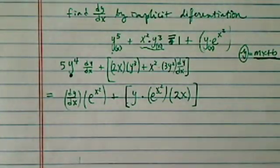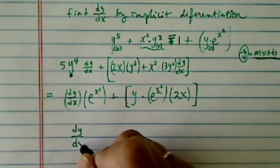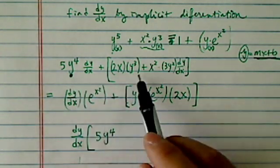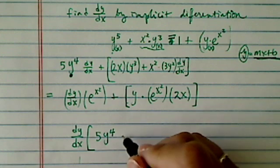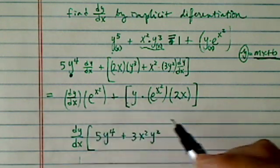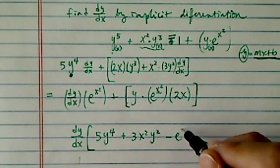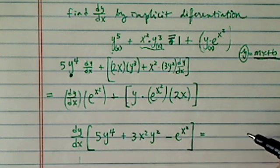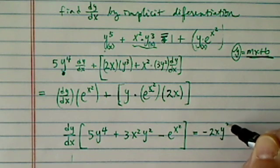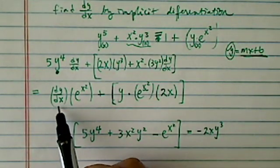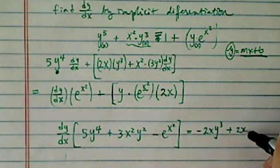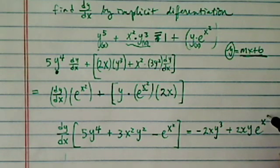All right, now all we have to do is gather everything together. dy/dx — let's see what we have. We have 5y to the fourth, that's this term, and then plus 3x squared y squared. That's on this side. I'm going to subtract e to the x squared — it's on this side — equals: let's move this one over, so it's minus 2xy cubed, and I have a plus 2xy e to the x squared.